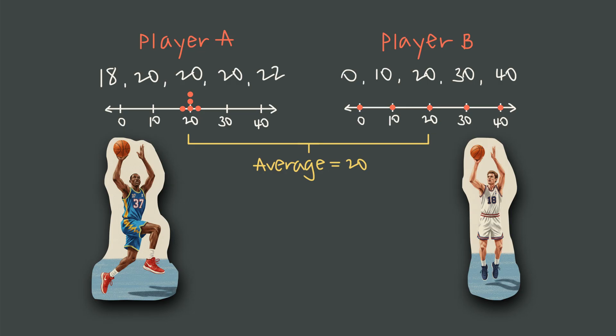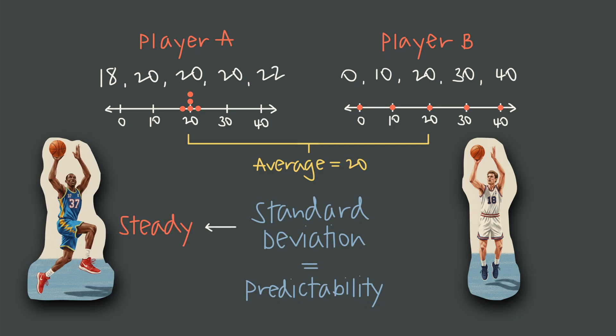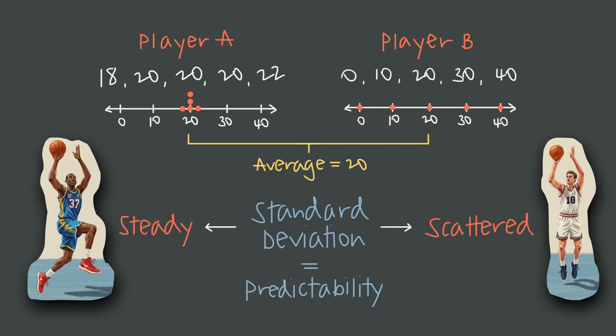Player A is consistent, while player B is all over the place. Their average is the same, but that doesn't tell you the most important part, the reliability. Standard deviation is the number that tells us about predictability and whether a player is steady, like player A, or scattered, like player B.